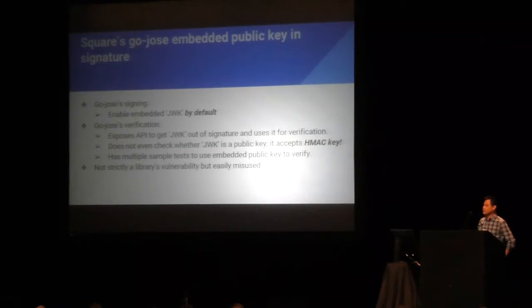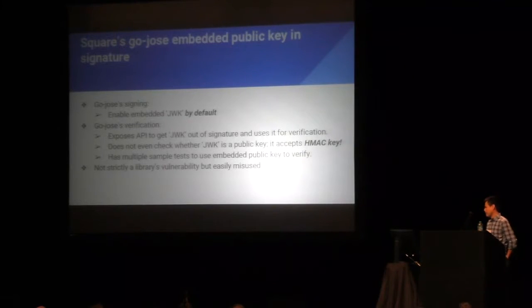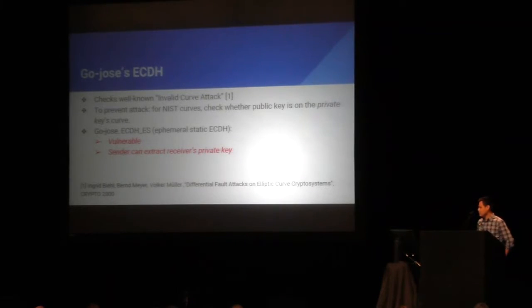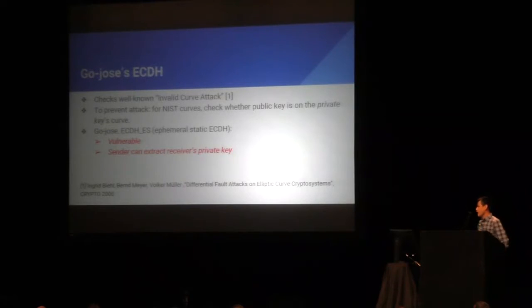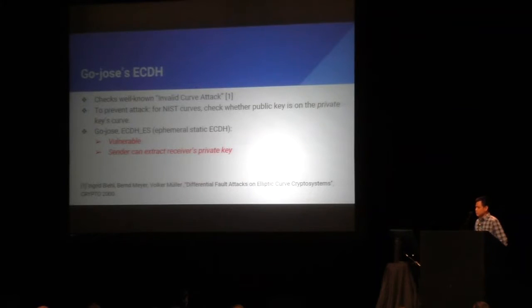GoJose enabled that feature by default, so any signature has the public key embedded in it by default. Just for fun, instead of sending a public key, I tried to send the HMAC key and it also accepted — I don't even know what it means to have an HMAC key together with an HMAC. The next problem: I looked at the ECDH implementation in GoJose. The first step is to check for the well-known invalid curve attack. For elliptic curves, you have to check whether the public key is on your curve. Otherwise, the attacker can send a public key on a different curve with a small order, and then use the Chinese Remainder Theorem to extract the private key. GoJose doesn't have any such check — one reason is the Go implementation doesn't have ECDH built-in, so the developer had to do it themselves, and you can guess they missed this critical check.